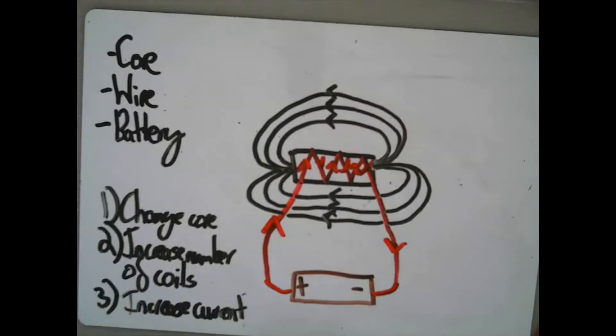Those are the three ways to increase the strength of an electromagnet. Electromagnets are used in many different scenarios because you can turn them on or off and change their strength. Some examples include an electric bell, a circuit breaker — which is something you'd find in your house — and using them to pick up cars in a scrapyard.